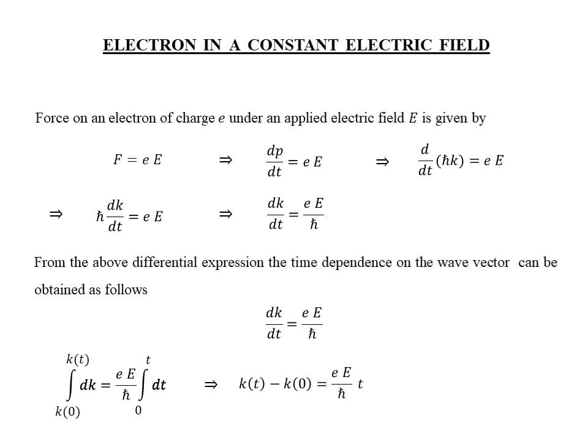Performing this simple integration and plugging the limits, we get the result as shown here. This result on the wave vector is not for any particular electron, but an average of the wave vectors of the electrons present in the system. With this understanding, I can state that the initial wave vector at time t equal to 0 is 0, because before the application of the electric field, the electrons move in random directions and their net momentum and wave vector average to zero. Hence the wave vector of the electron under a constant applied external electric field at time t is simply this — an important result I put in a box.